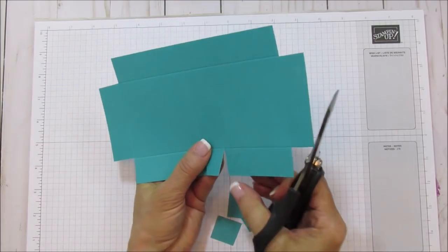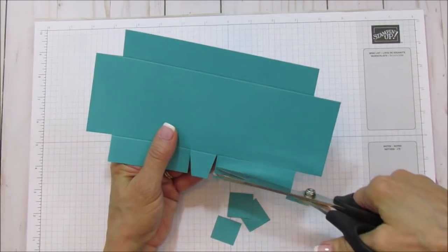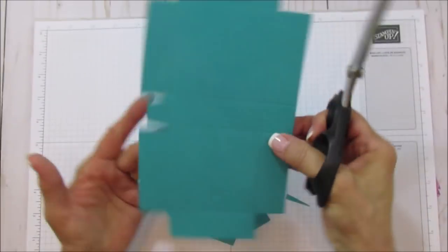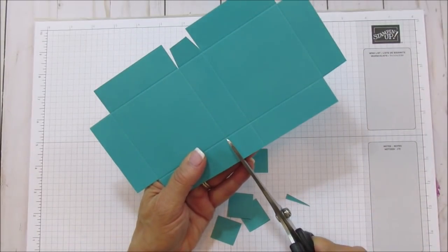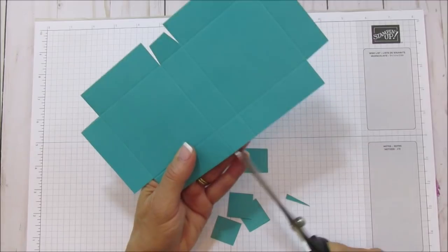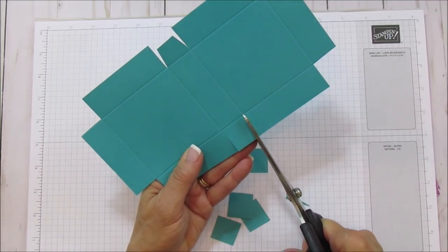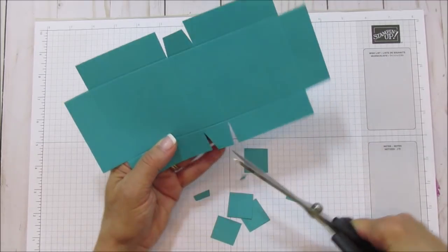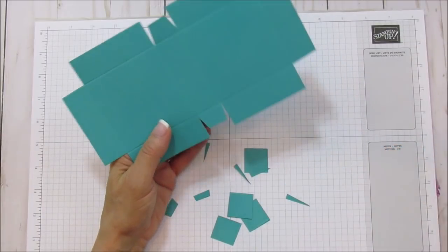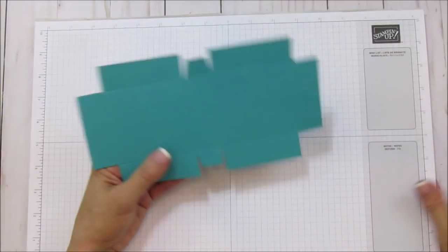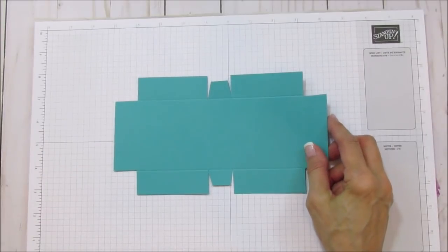You're just cutting up each one of these side ones. I'm going to cut a little bit off here. It just folds into the box a little bit easier for me.